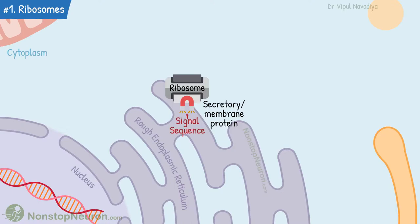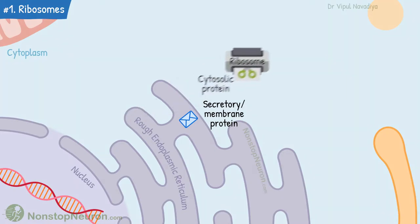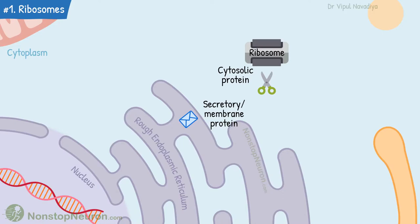This localization is guided by a signal sequence — a small sequence of amino acids in the protein that is being synthesized. This sequence is seen only with secretory proteins and membrane proteins. As the ribosome starts synthesizing the protein, this sequence appears first and takes the ribosome to the endoplasmic reticulum, where the synthesis of the remaining chain is completed. The sequence is then removed during post-translational modification. In the case of cytosolic protein, no such sequence is seen; the ribosome diffuses into the cytosol and protein is synthesized there. In short, ribosomes in cytosol and on rough endoplasmic reticulum are identical and in equilibrium, and their localization depends on which type of protein they are synthesizing.